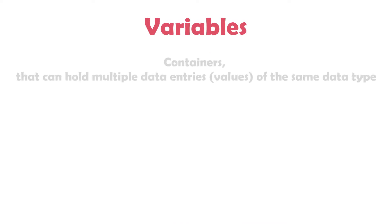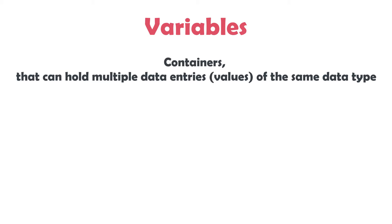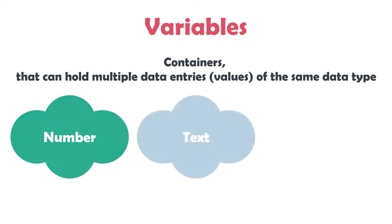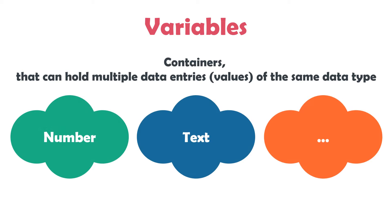I will start explaining variables. Variables are containers that can hold multiple data entries or values of the same data type. It means we use them to store data which we need in the process. Data plays the main role in each process because each process needs data to create an output. The data can be a number, text, or something else.